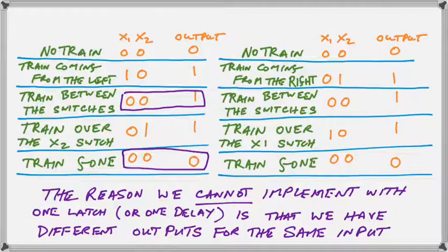Anything that has that many states can't possibly be implemented with only one latch. Because one latch only has two states. Off or on. Zero or one. So we're going to need two latches to implement the four states shown in this table.